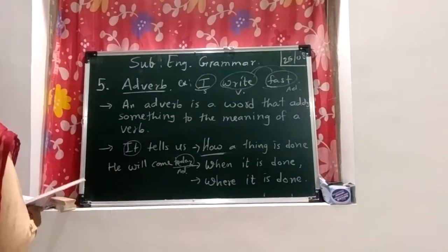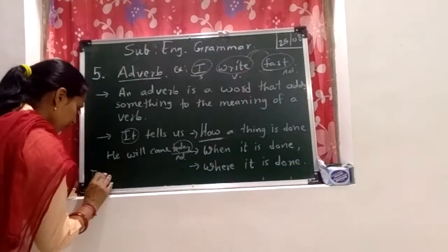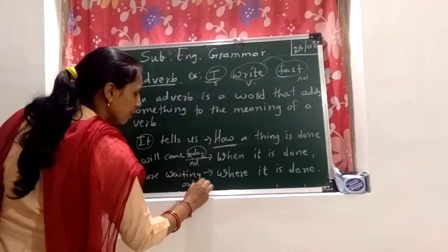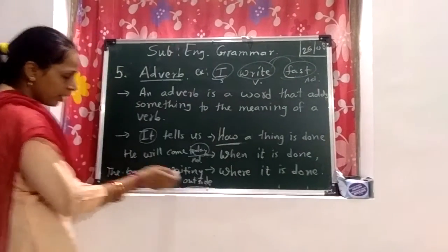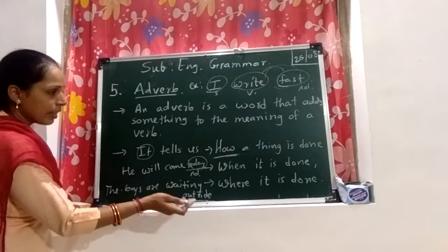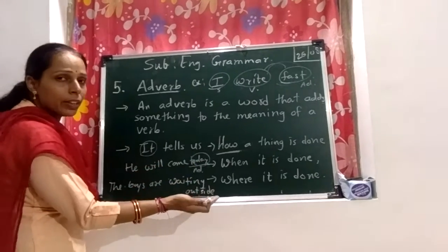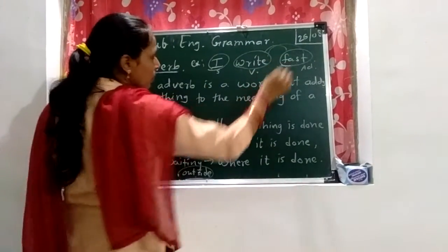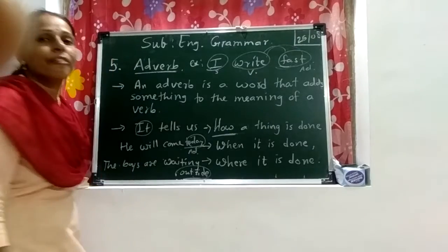And an adverb also tells us where the action is done. For example: the boys are waiting outside. Where are the boys waiting? Outside. So 'outside' is an adverb. He will come — when? Today. The boys are waiting — where? Outside. And 'fast' is also an adverb. So adverb tells us how, when, and where a thing is done.